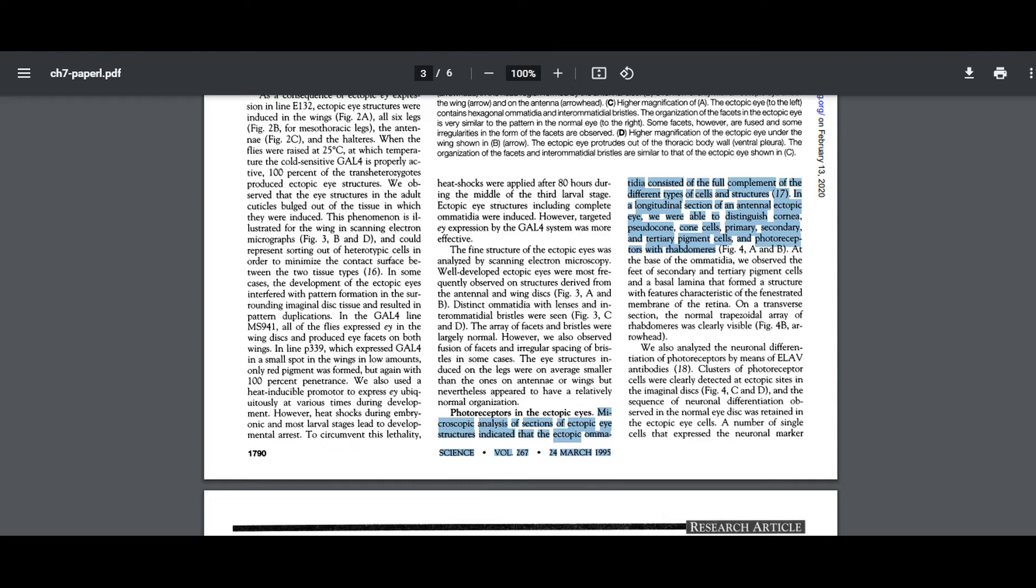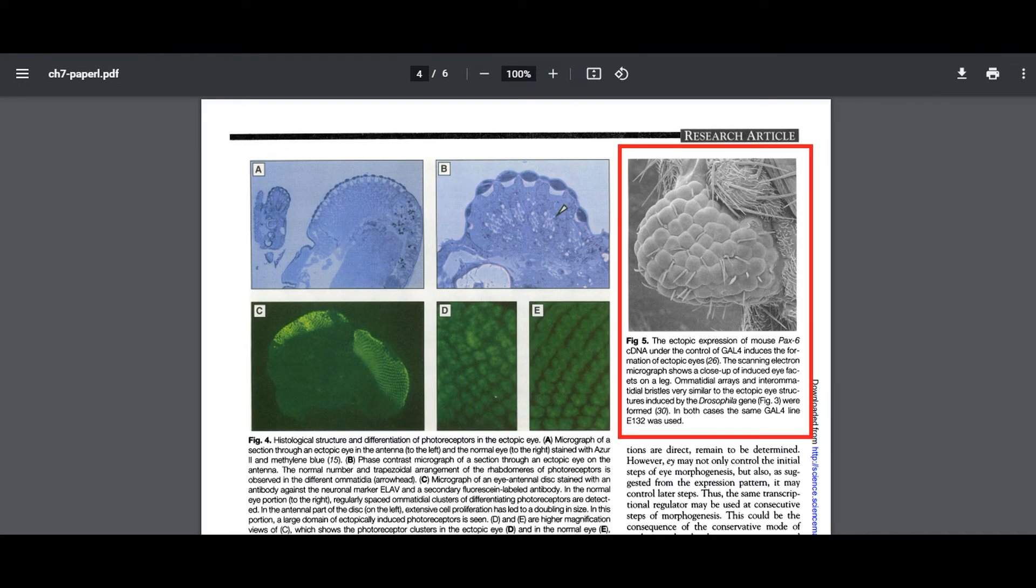According to the paper, quote, microscopic analysis of sections of ectopic eye structures indicated that the ectopic omatidia consisted of the full complement of the different types of cells and structures. In a longitudinal section of an antennal ectopic eye, we were able to distinguish cornea, pseudocone, cone cells, primary, secondary, and tertiary pigment cells, and photoreceptors with rhabdomers, close quote. Thus, Eyeless is indeed the master control, as its activation, regardless of location, produces normal eye morphogenesis.